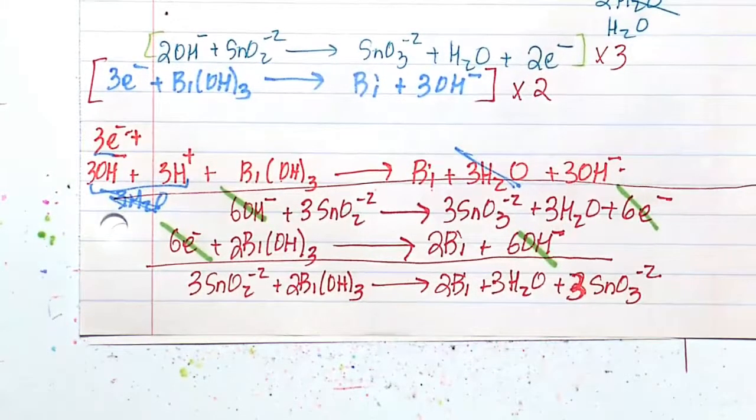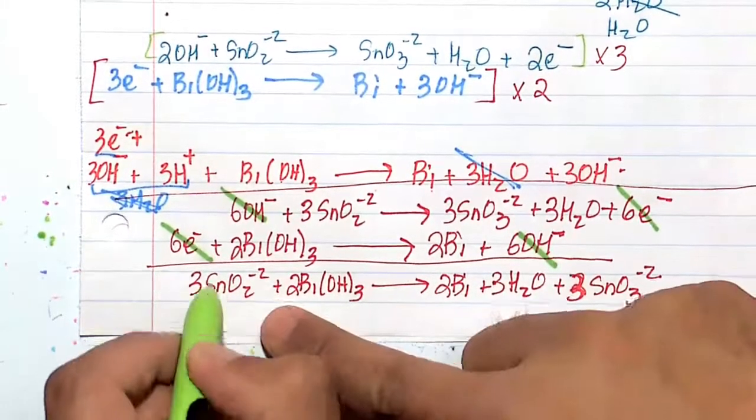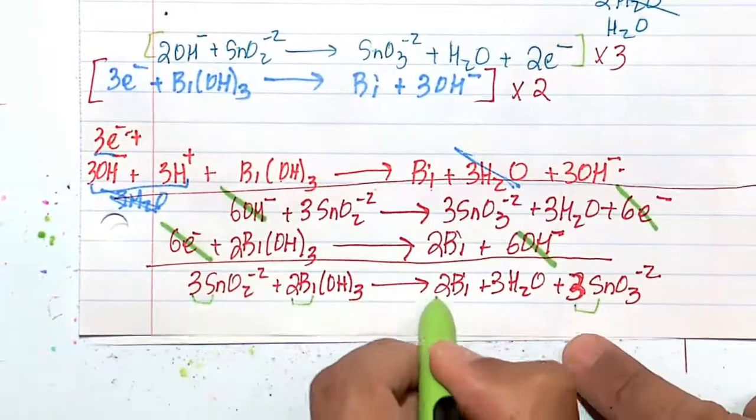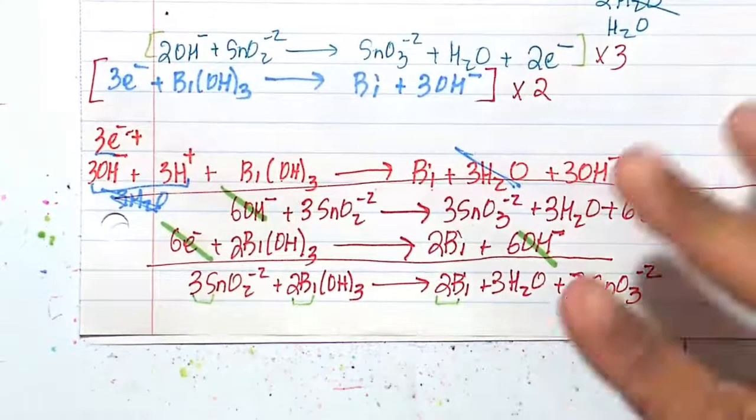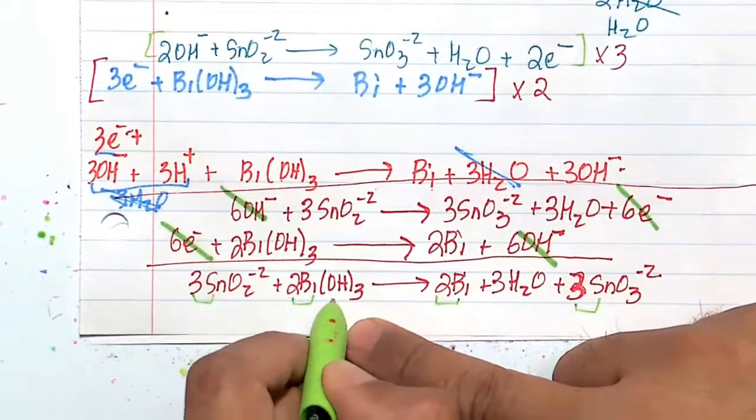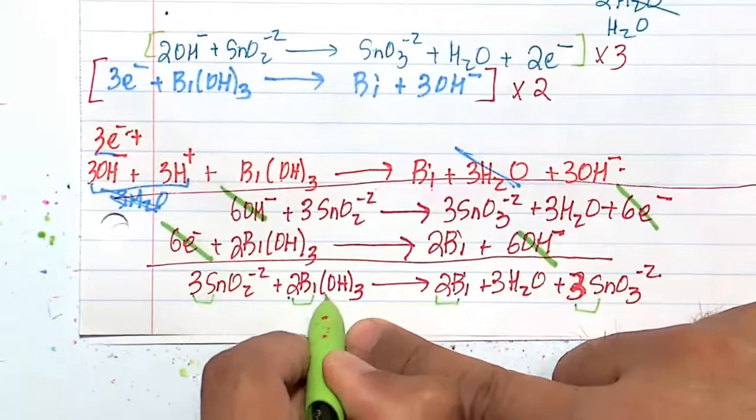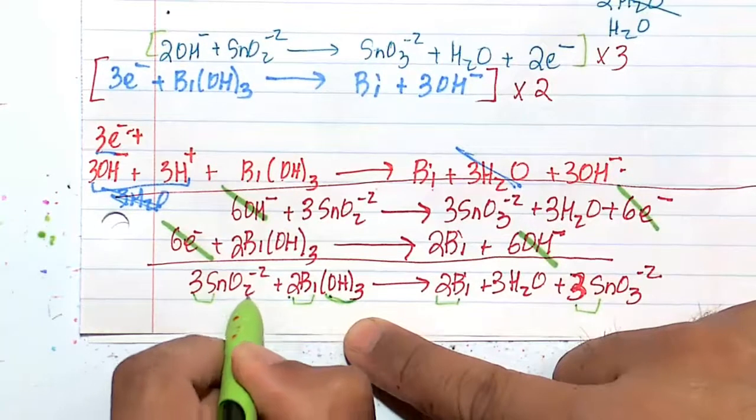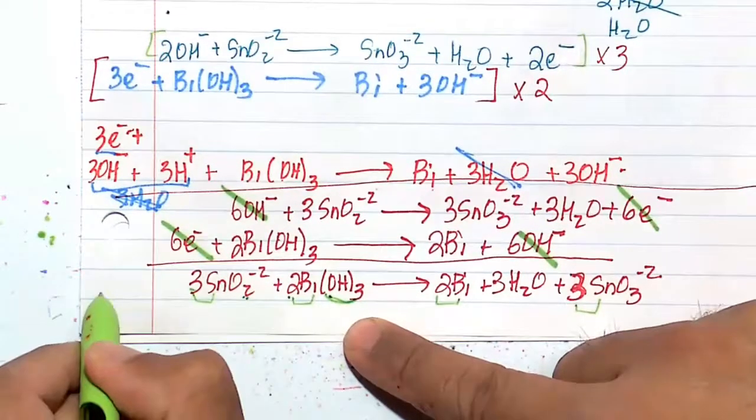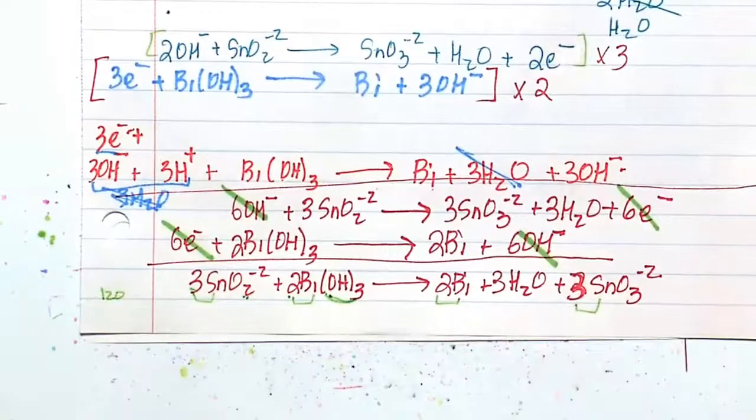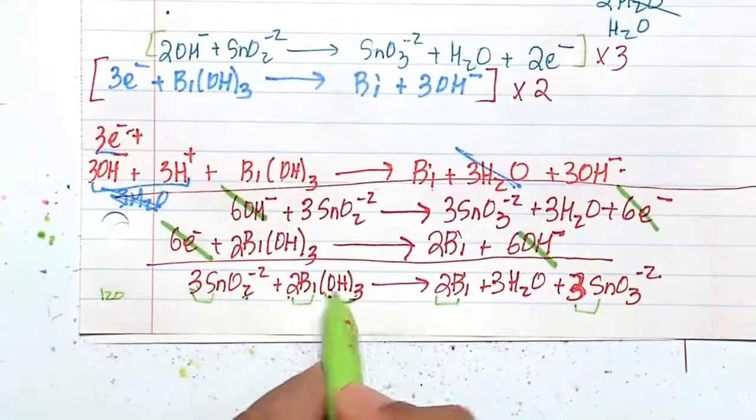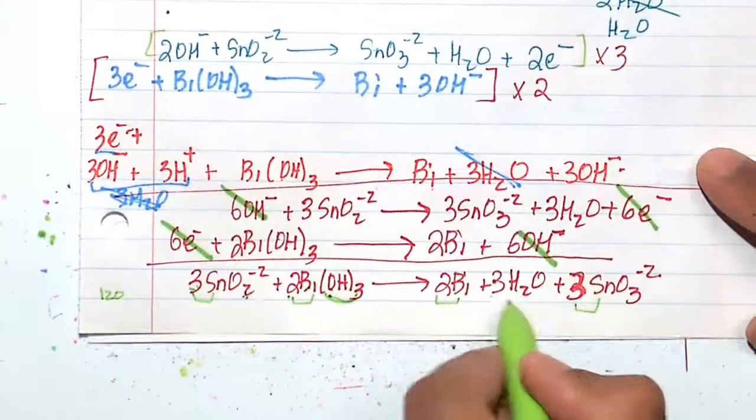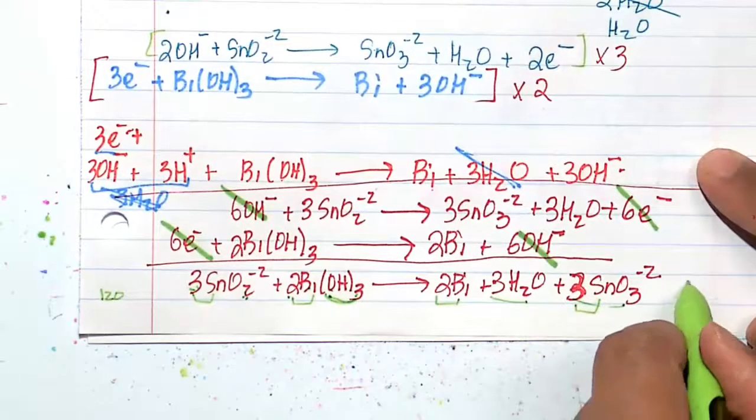All right, let's do our final checking here. So we have 3Sn, 3Sn. That's good. 2Bi, 2Bi. Good. The hydrogens and oxygens worry me a little bit. All right, so 2 times 3, so that's 6 oxygens, plus another 6 oxygens gives me 12 oxygens. 3 times 2 is 6, 3 times 2 is 6, so 6 plus 6 is 12. Here we have 3 oxygens plus 9 oxygens is 12.